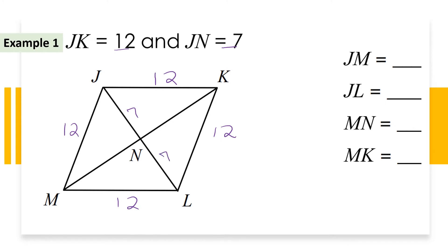So JM is 12. JL would be 14 because the diagonals bisect each other, so each half is the same — JN is 7 and NL is 7, making JL equal to 14.